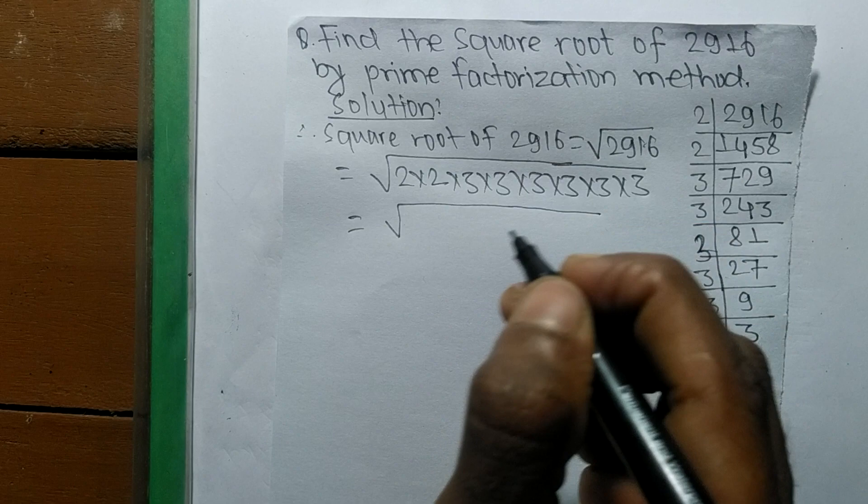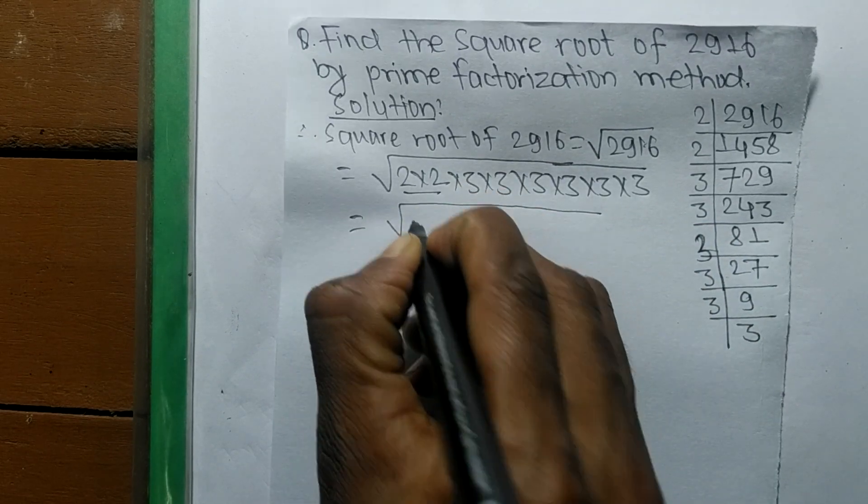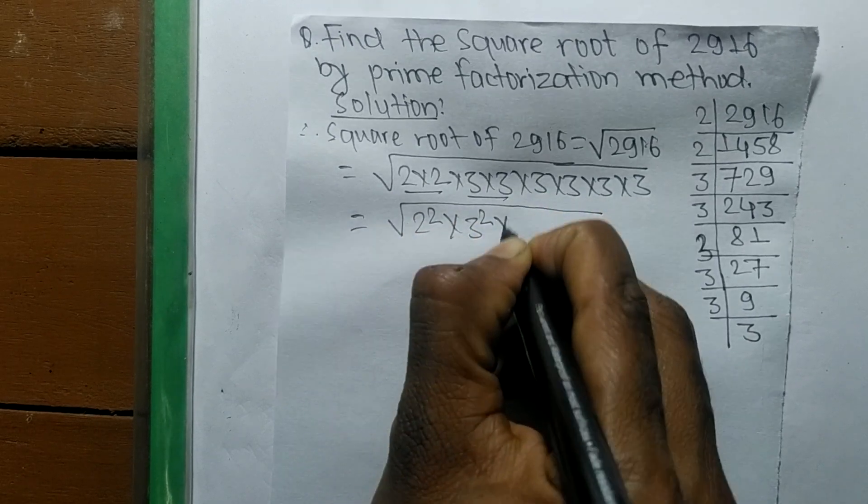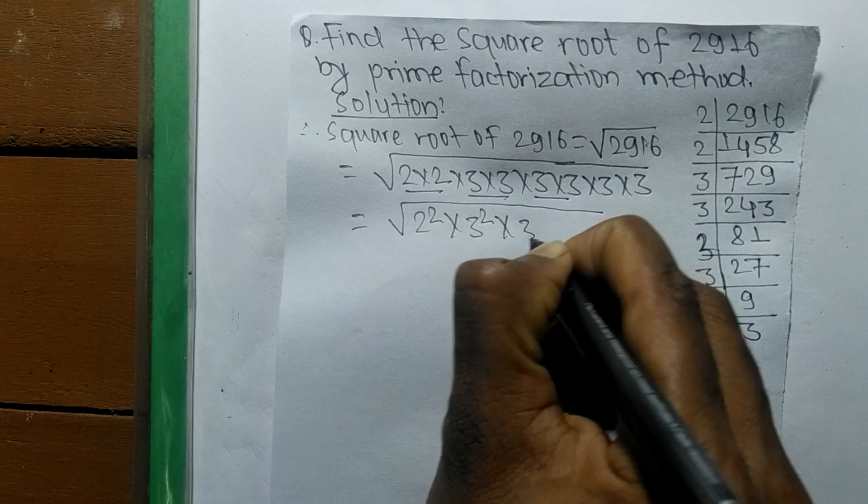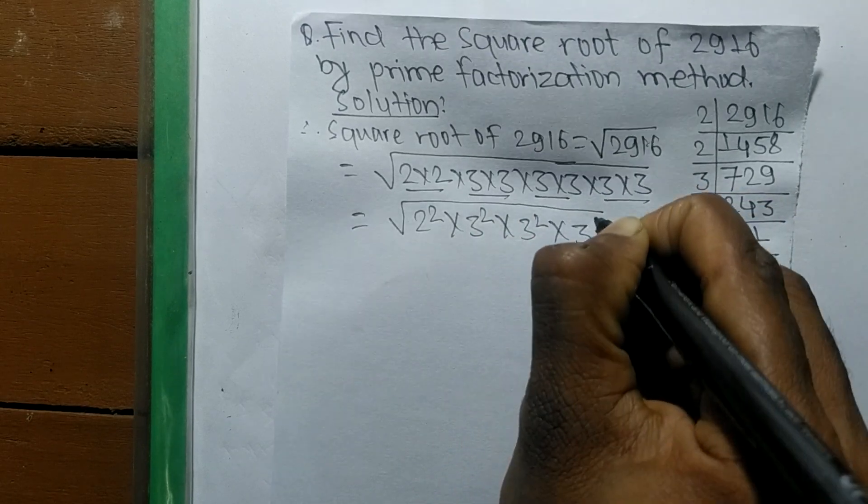After writing all the prime factors, now we make the square of these prime factors. So it is 2 into 2, that is 2 squared. 3 into 3, that is 3 squared. 3 into 3, 3 squared, and again 3 into 3, it is 3 squared.